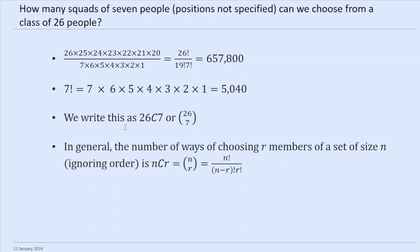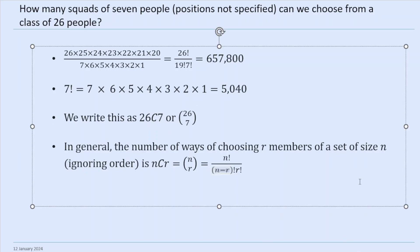So if you want to know how many ways to choose a squad with positions not specified, we start with the number of ways to choose with positions specified and divide by 7 factorial — that's the ratio between the two. Here it's 26 factorial over 19 factorial times 7 factorial. We write this as 26C7. In general, the number of ways of choosing r members from a set of size n, ignoring order, is nCr, which is n factorial over (n minus r) factorial times r factorial.